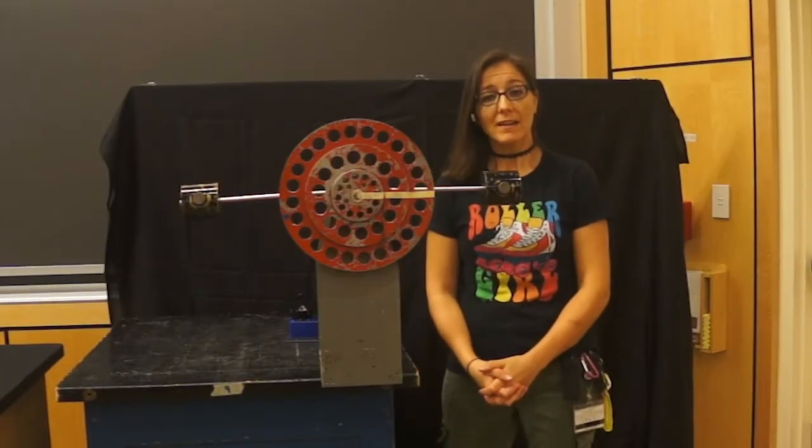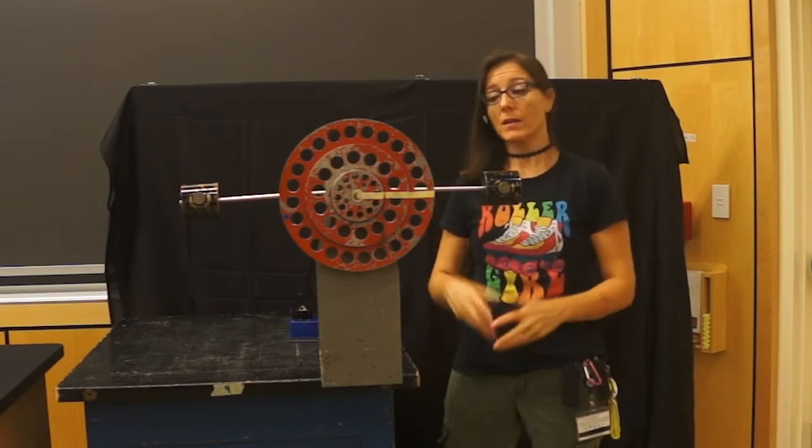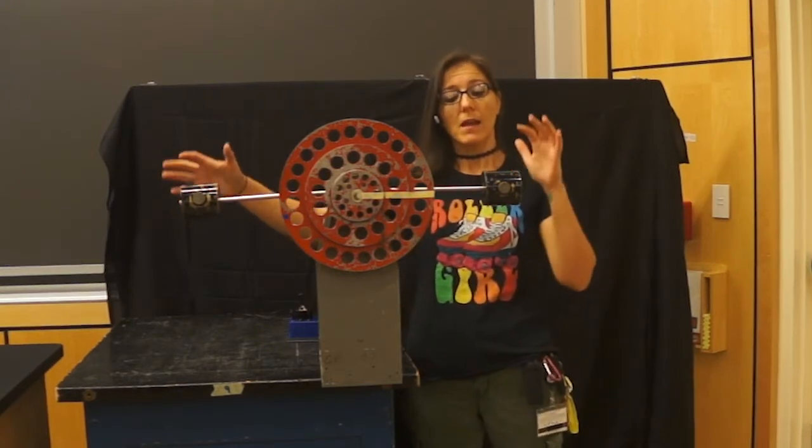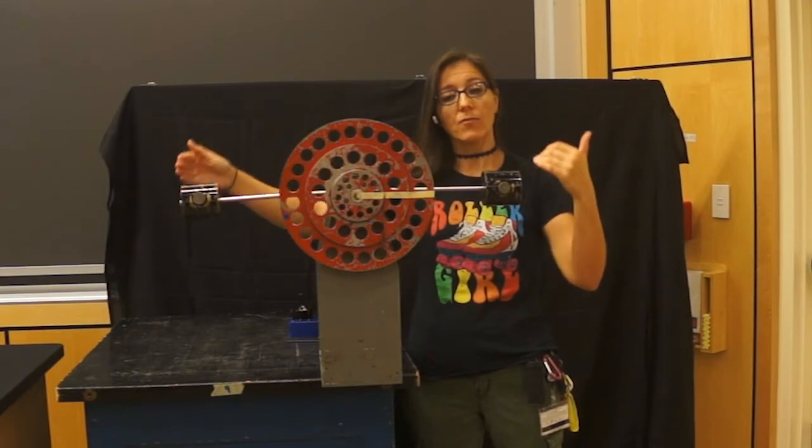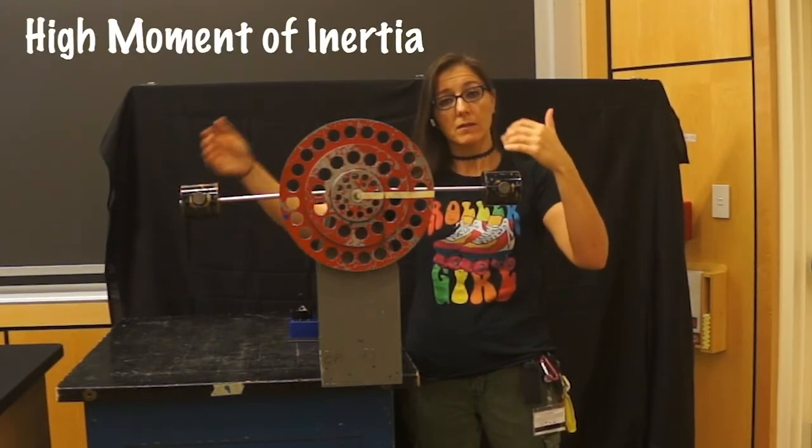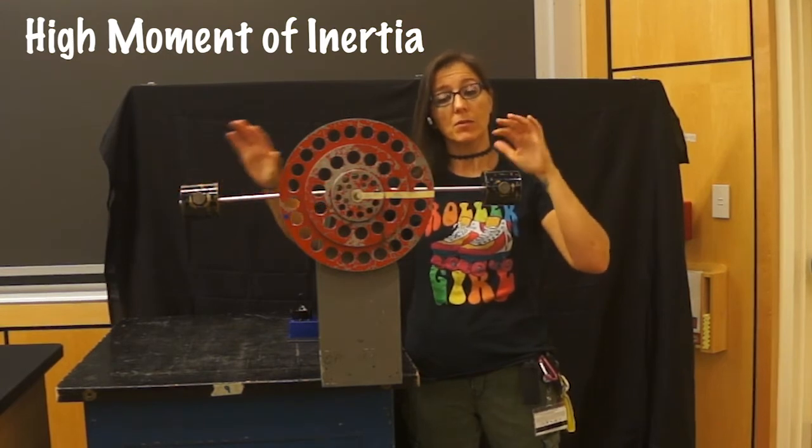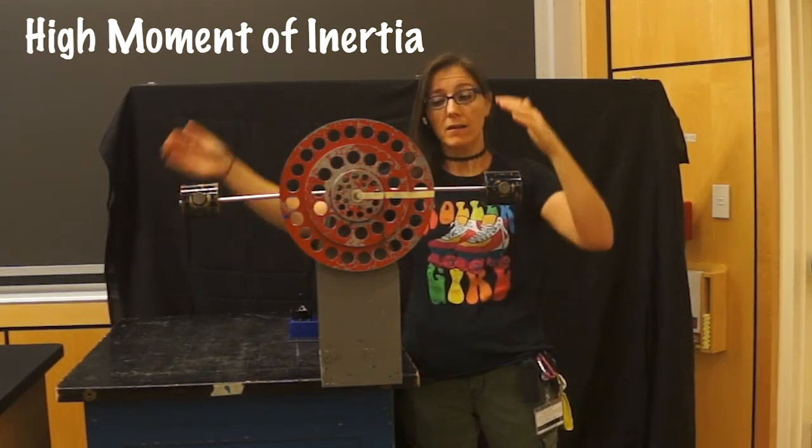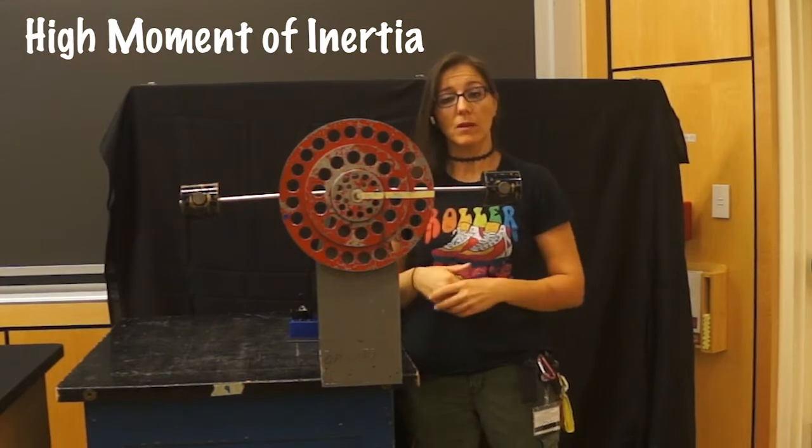Now let's take a look at this system if we've changed the rotational inertia of the system. The masses are now located far out at either end, moving the moment of inertia or increasing the moment of inertia because we've moved the mass to the outside of the circle it will rotate through.